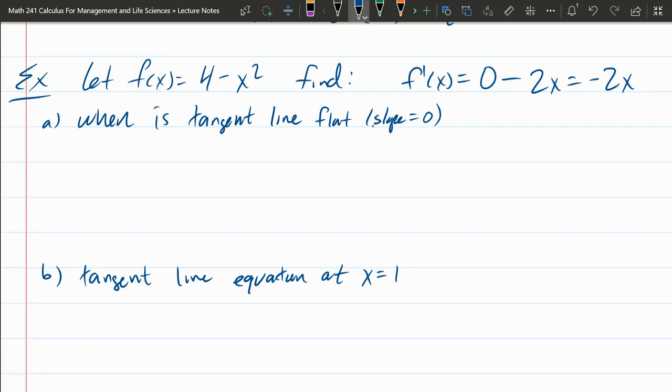Part A, when is the tangent line flat? The slope of the function is f prime of x, and I want to know when is that slope 0? So f prime of x is negative 2x, just computed it. This is an easy equation to solve. Multiply both sides by negative 1 half, and you get x equals 0. So that is the answer to part A.